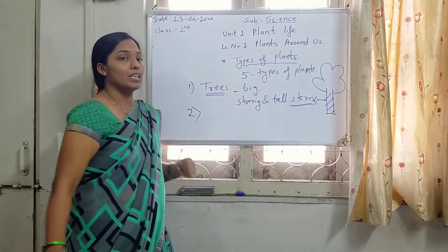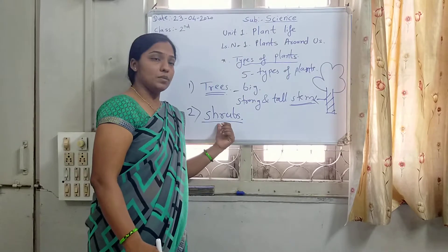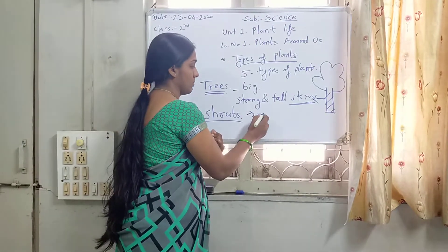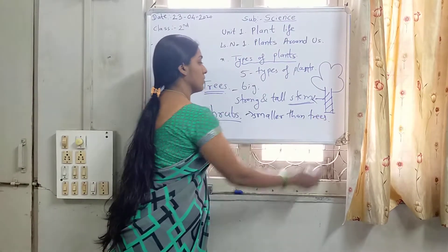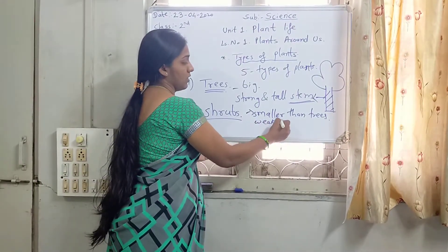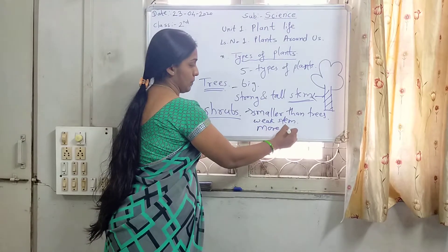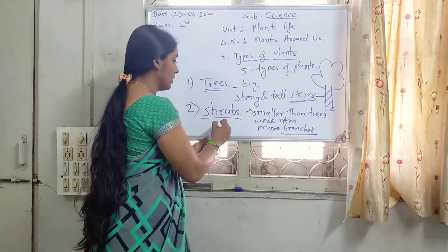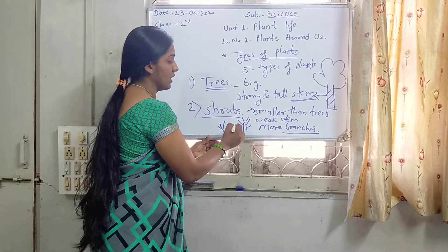The 2nd type of plant is Shrubs. Shrubs are comparatively less tall or smaller than trees, and have a comparatively weak stem. The shrubs have more branches. Branches are the smaller stems growing out from the main stem.